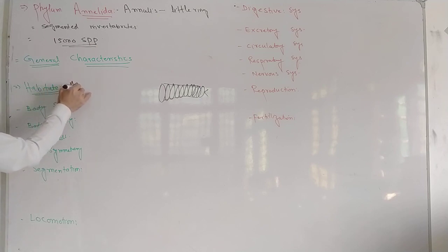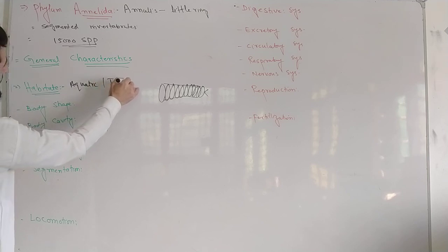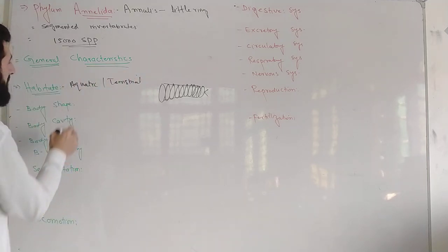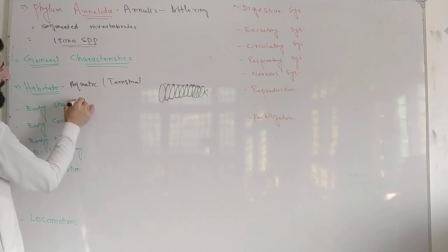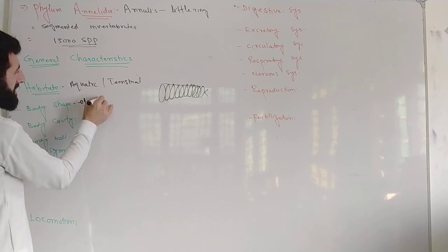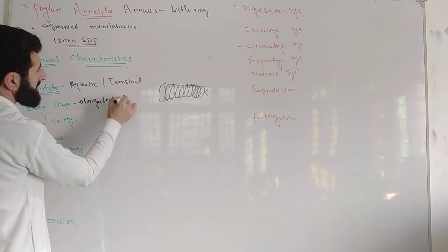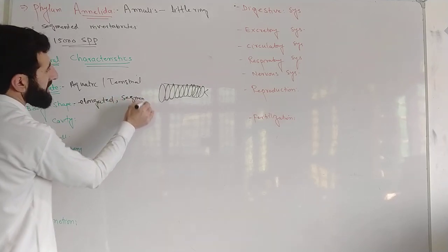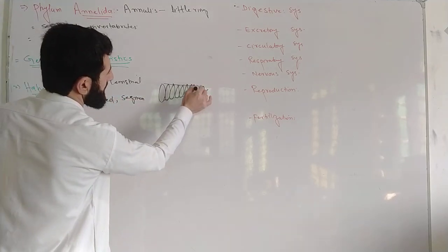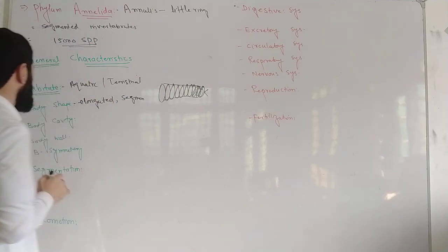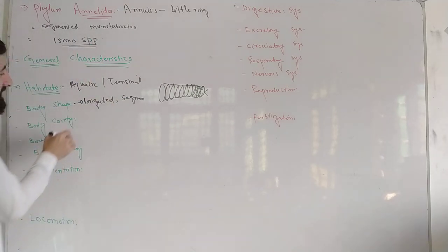Some members are aquatic and some are terrestrial. Body shape—this group is elongated, you can see it. This group is elongated and segmented. One segment, this segment, this segment, this segment.